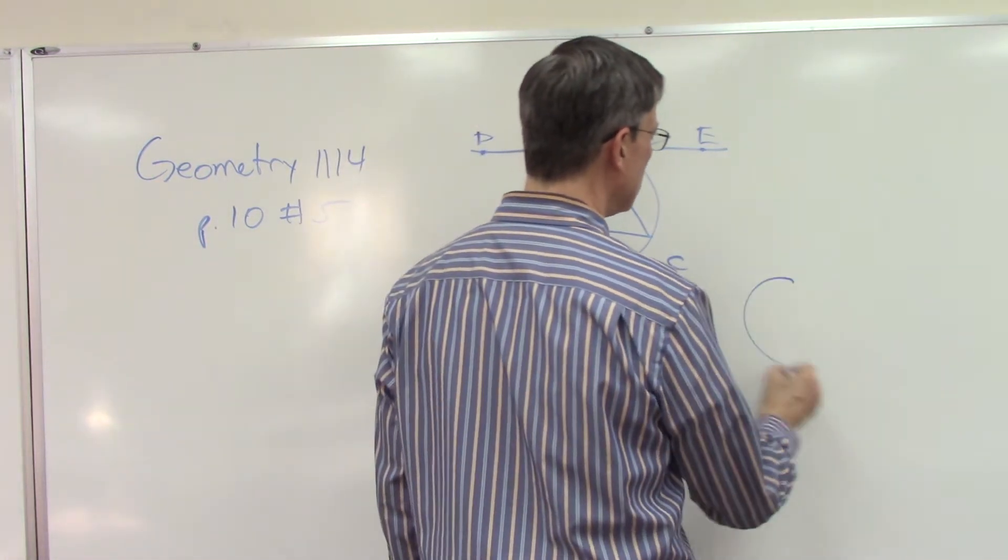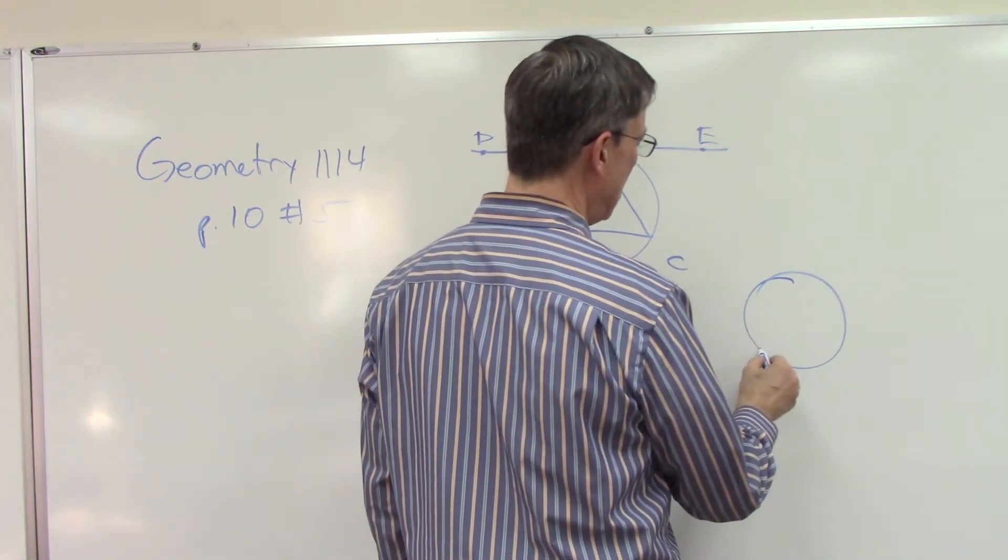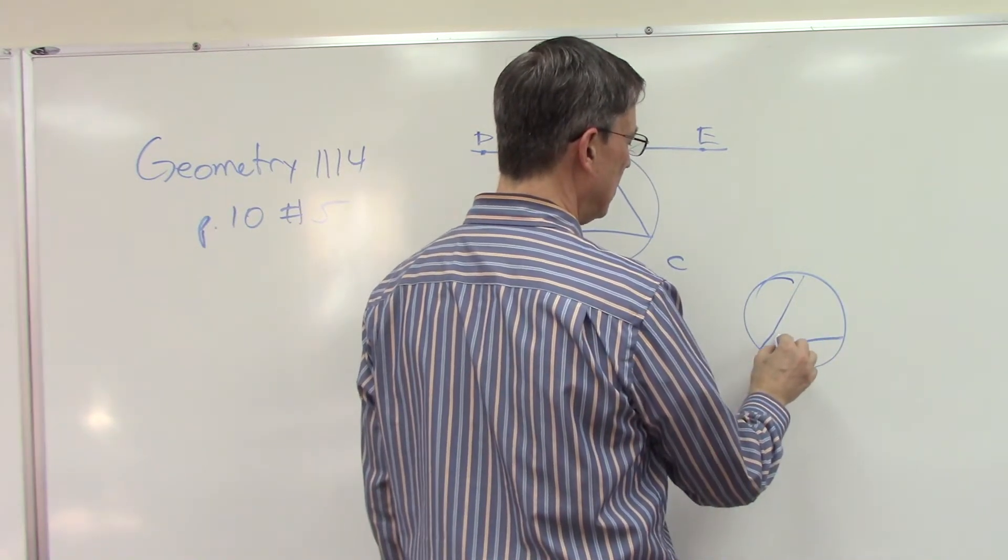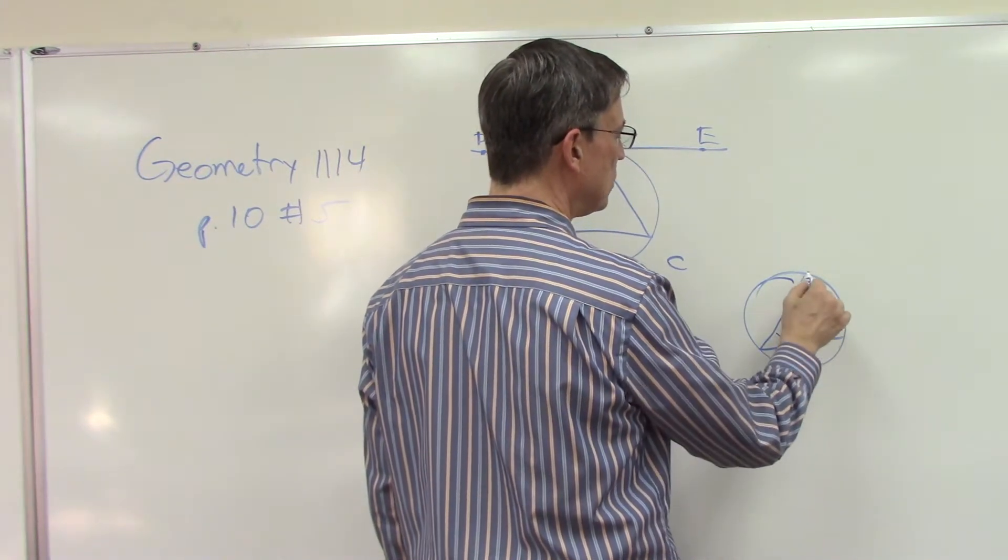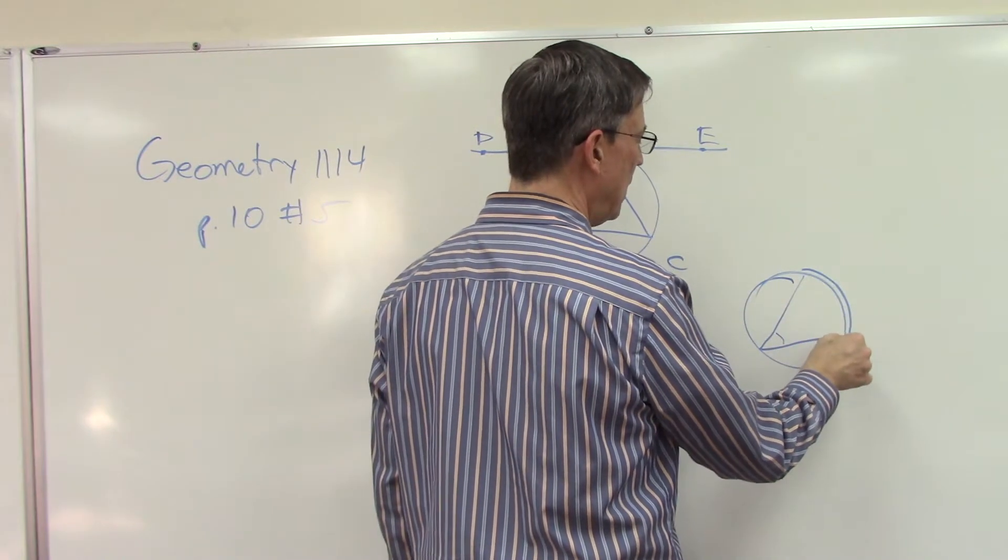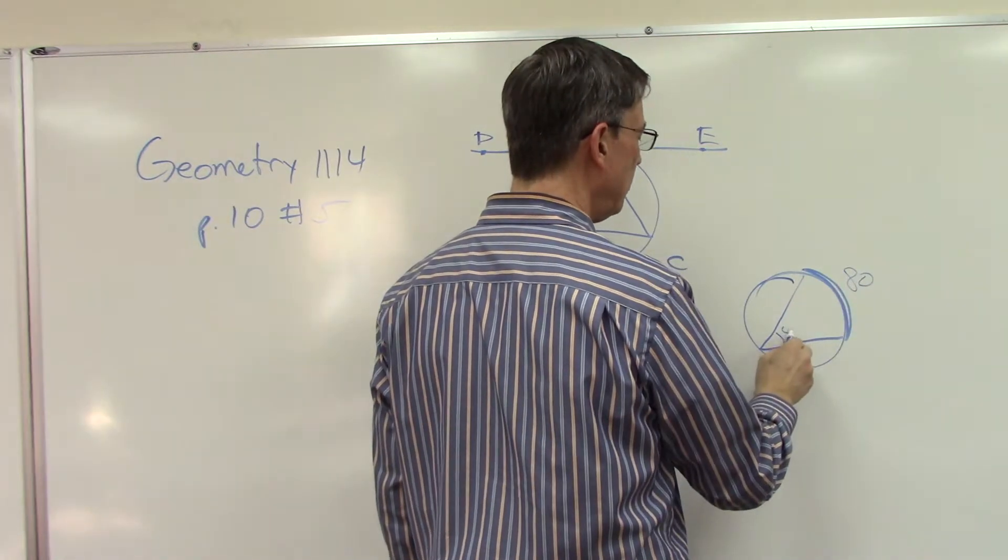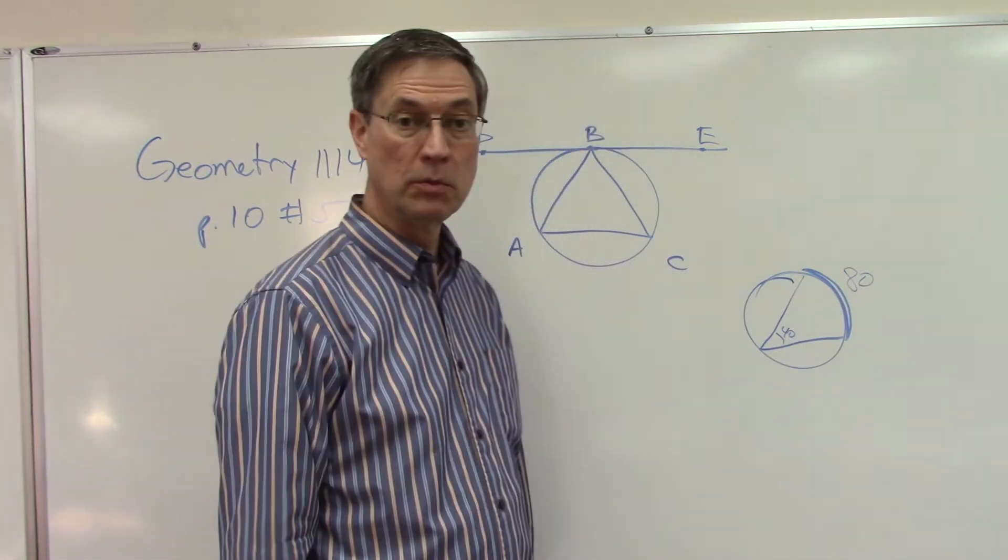So in other words, if I draw a circle like this, and I draw an angle in here, this number of degrees is going to be half of this arc. Okay? So if this is, let's say, 80 degrees, then right away I know that's 40 degrees.